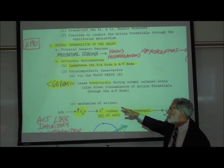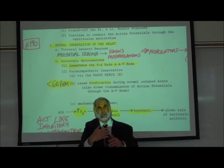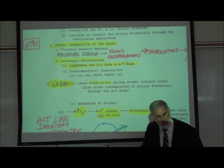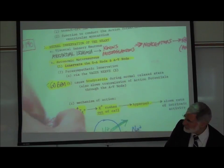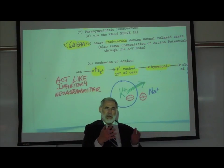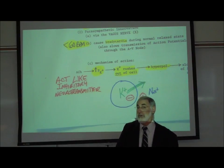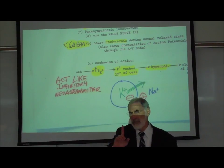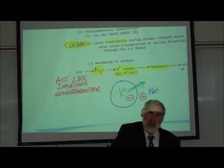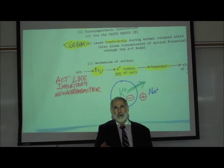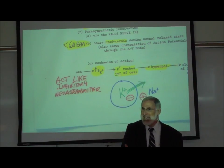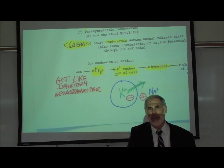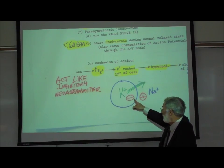The parasympathetics have the effect of slowing the heart rate down — that's called bradycardia. How do the parasympathetics slow down the heart rate? Parasympathetics release acetylcholine onto the heart. The acetylcholine activates the muscarinic acetylcholine receptor sites, and what it actually causes is an opening of ligand-gated potassium ion channels. Acetylcholine acts like an inhibitory neurotransmitter on the heart, causing the heart rate to slow down.